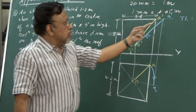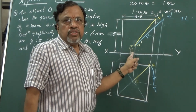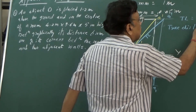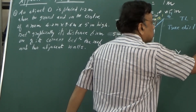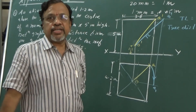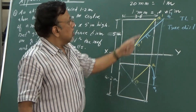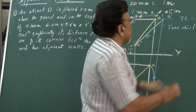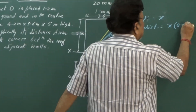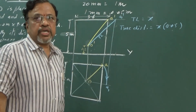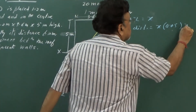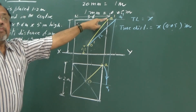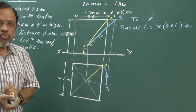I will measure this true length TL in mm — call it x. The actual true distance is then x multiplied by the scale factor 0.05. This gives the true distance between the object and the corner made by the roof and the two adjacent walls.